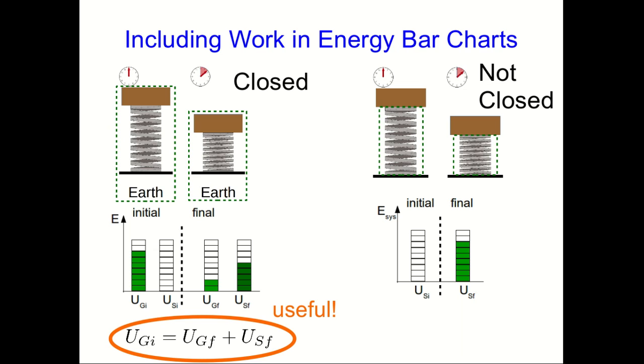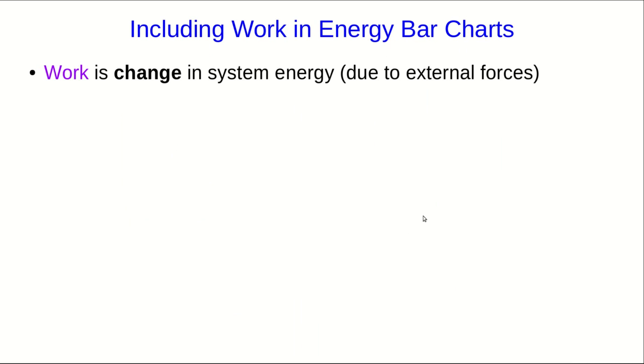On the other hand, in the non-closed situation, we don't end up with an equation. We end up with an inequality, or you could say it's telling us that the spring potential energy is initially zero and later it's not zero. But if we want to solve for something, that is certainly less useful. The problem here is that our bar chart is missing a piece.